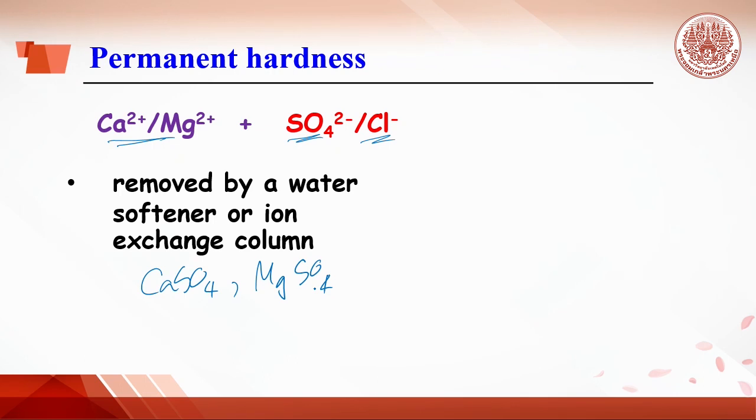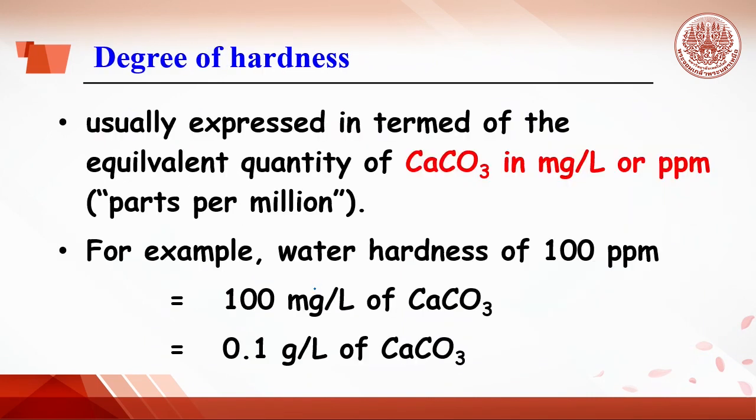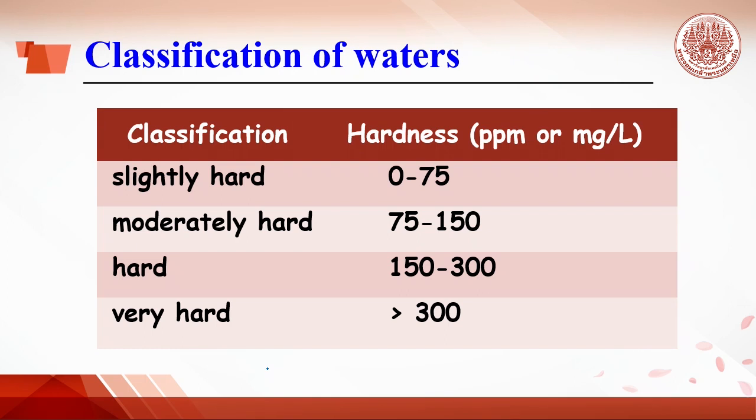It can be removed using a water softener or ion exchange column. Hardness of water is usually expressed in terms of equivalent quantity of calcium carbonate in milligram per liter or ppm, which stands for parts per million. For example, water hardness of 100 ppm means 100 milligrams per liter of calcium carbonate or 0.1 grams per liter of calcium carbonate in water. Here is the general guideline for classification of water. For example, water with hardness of 0 to 75 ppm is defined as slightly hard.